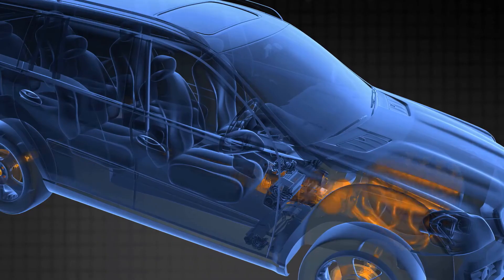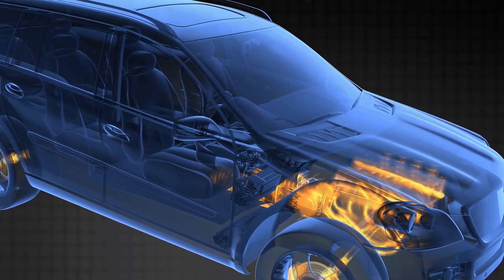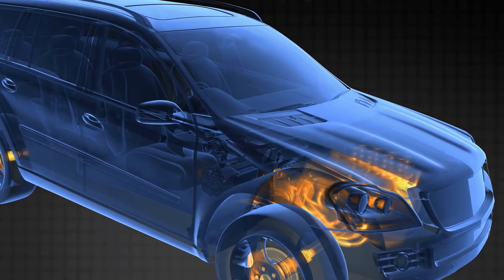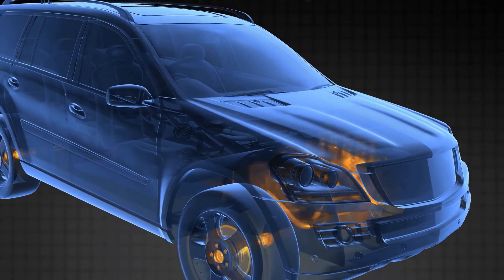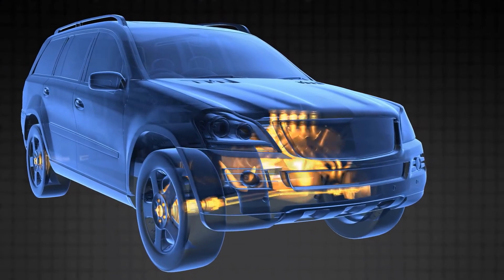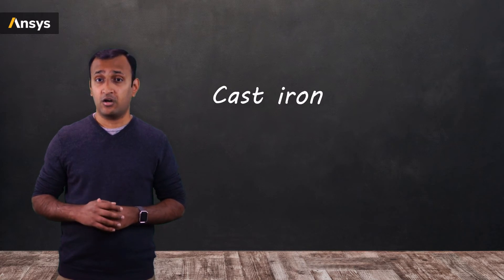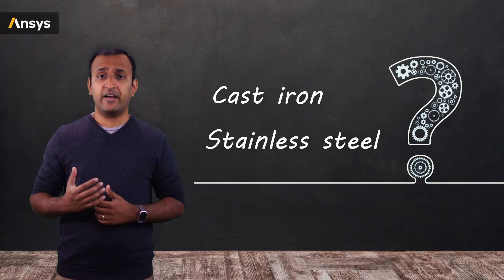For instance, the internal combustion engine of the same car is subjected to very harsh mechanical and thermal environment, and the material must withstand the wear and tear. So, how does one decide whether to choose, say, cast iron or stainless steel for manufacturing the engine block?